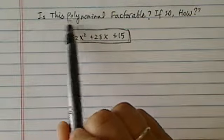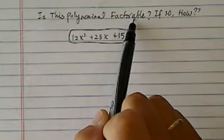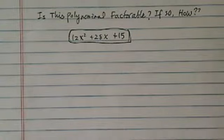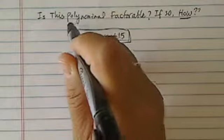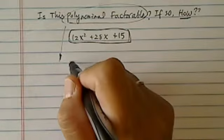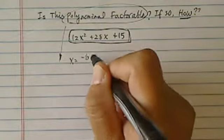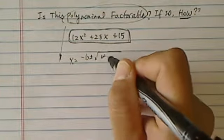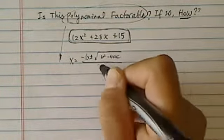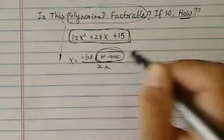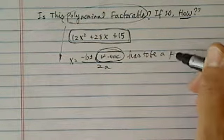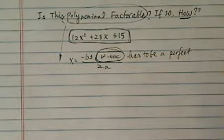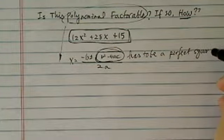So of course you want to know if this polynomial is factorable first, and if so, then we're dealing with how to factor. So let's take a look. If a polynomial can be factored, then this x equals minus b plus minus b squared minus 4ac divided by 2a, this chunk has to be a perfect square.